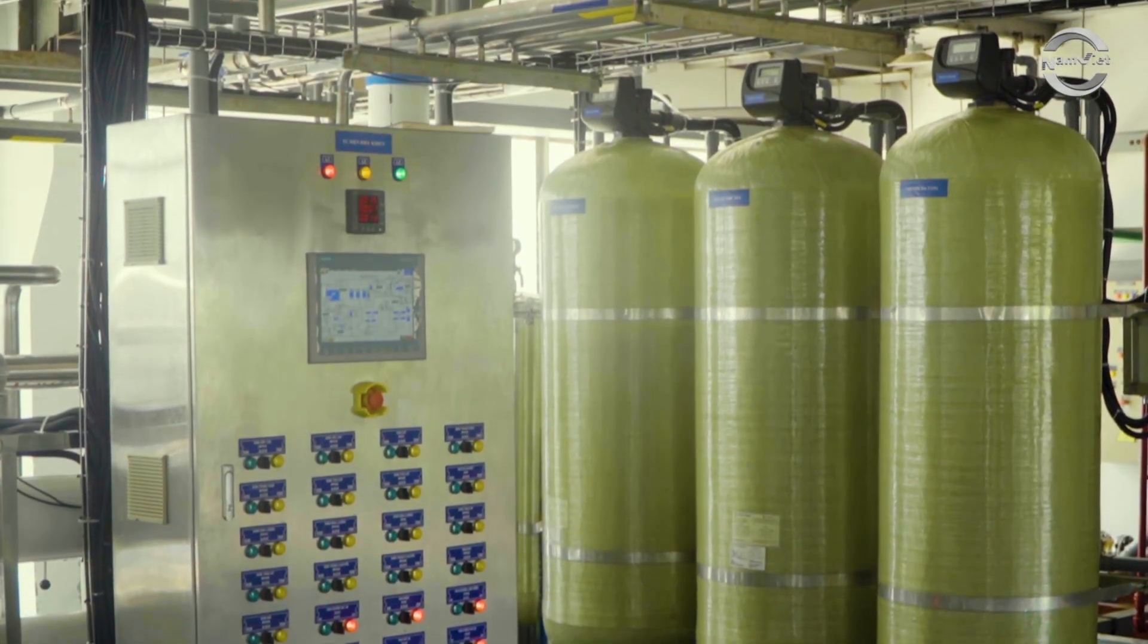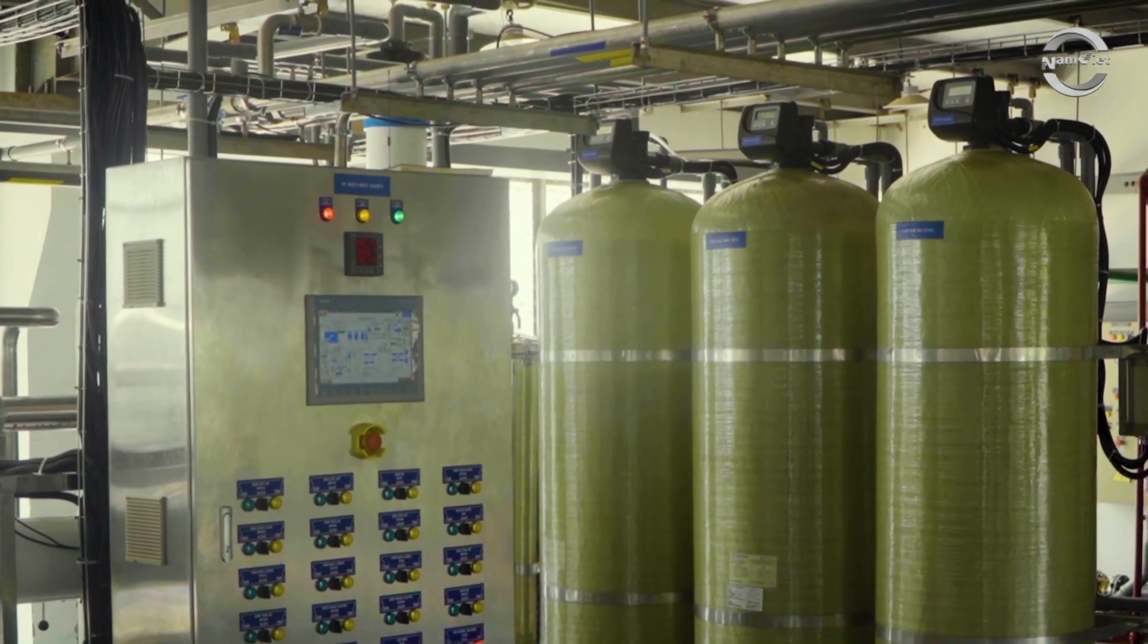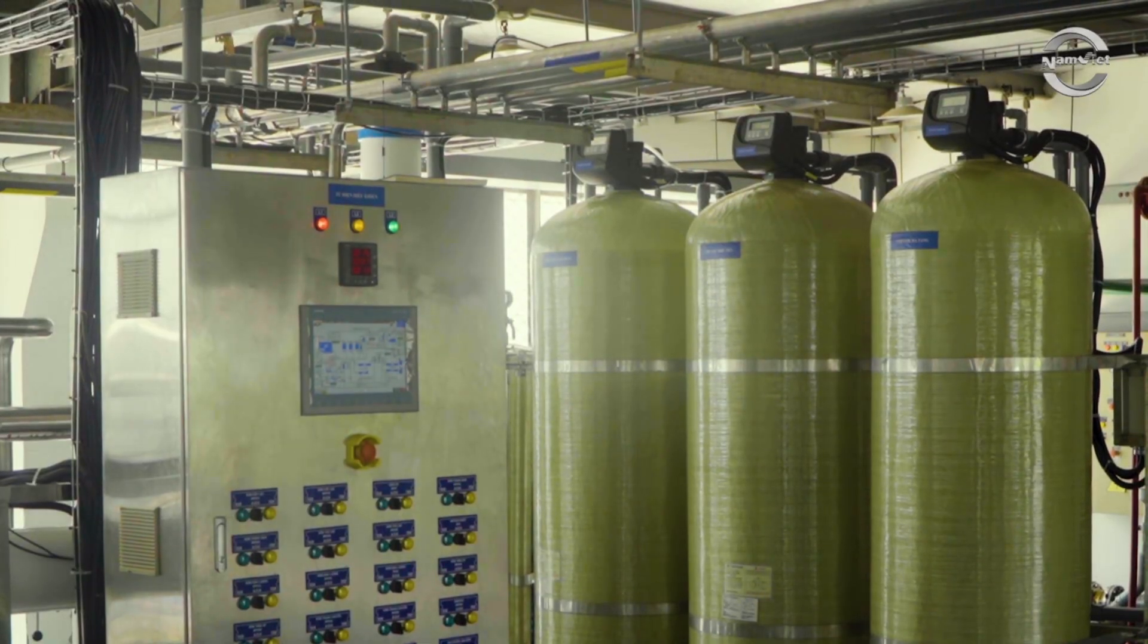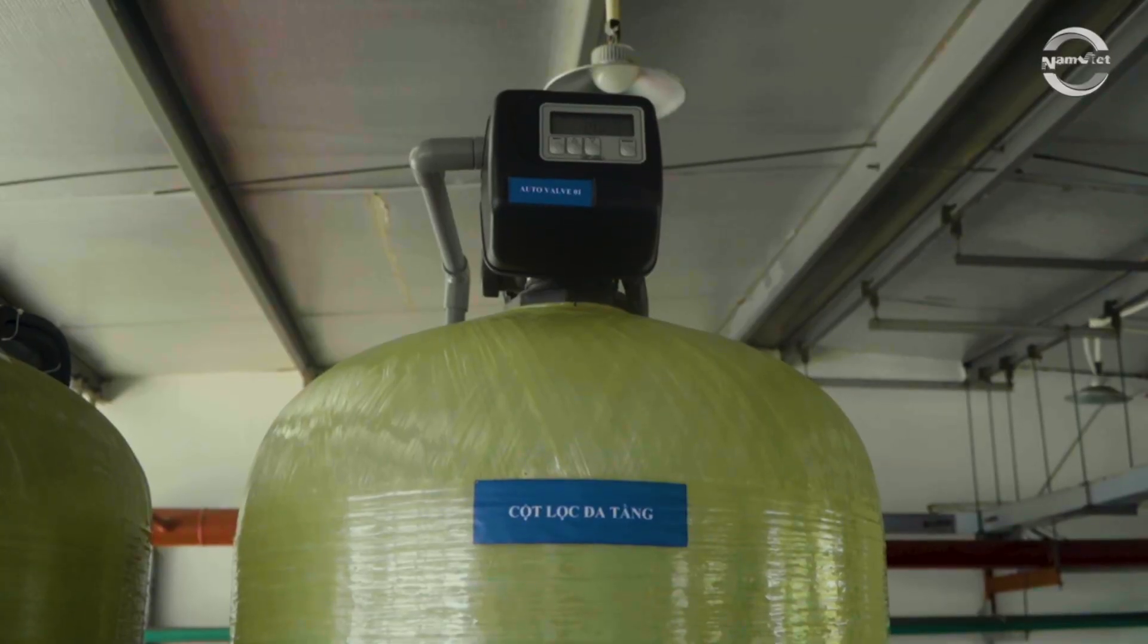The RO system includes a pre-treatment unit with filter columns equipped with automatic valves, programmed to control backwashing and regeneration.